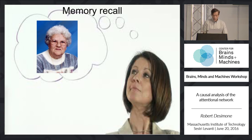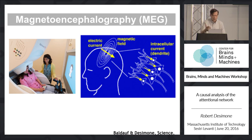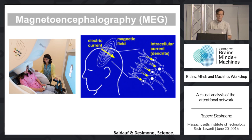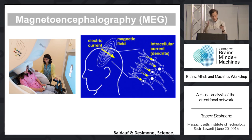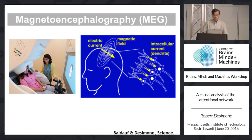One of the ways we've tried to identify the sources of these signals across the whole brain in human subjects is using magnetoencephalography, which gives us very accurate timing of neural signals so we can do this causal analysis using timing. We combine this with fMRI to get increased spatial localization.